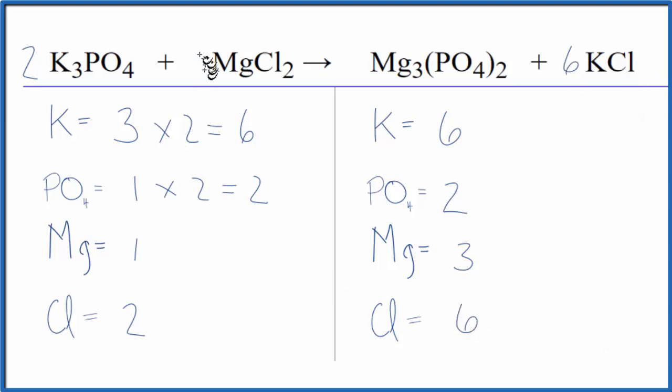Let's put a three in front of the magnesium chloride, because now we have one times three. That balances the magnesiums. And two times the three, that balances the chlorine atoms. And we're done. This equation's balanced.